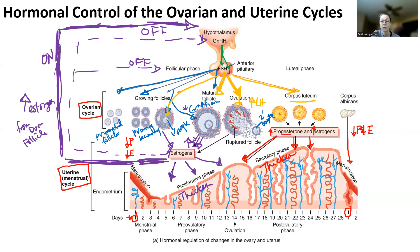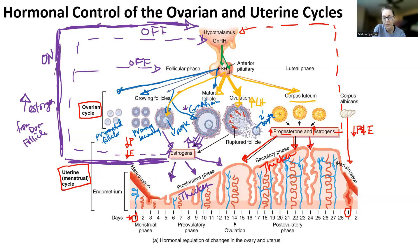That causes the secretory phase — the thickening of the endometrial lining even more for two more weeks. We want to give the endometrial lining two weeks to thicken so that we can have implantation of the embryo if fertilization occurred. Progesterone and estrogen also have a negative feedback effect. As progesterone and estrogen go higher, they turn off this positive feedback mechanism, turning off FSH and LH. The reason is you don't want to create any more follicles — you just want the endometrial lining to thicken for potential implantation.